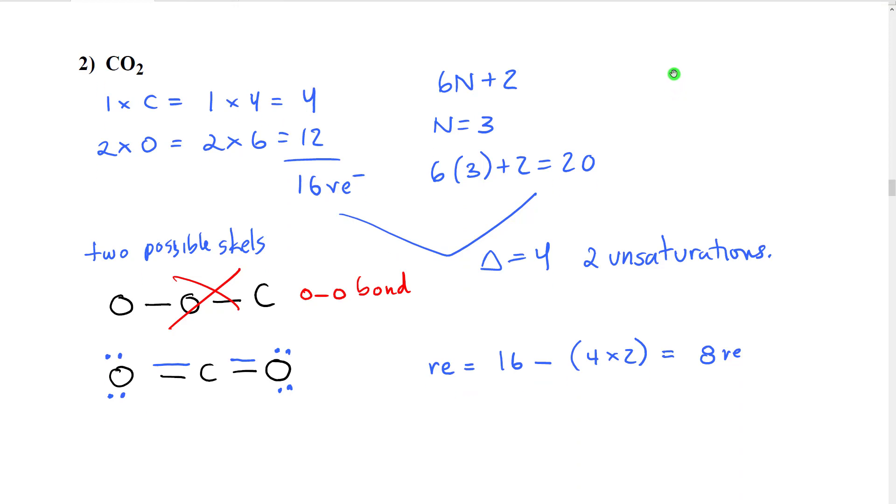The next Lewis structure I'm going to work is carbon dioxide, CO2. So first of all, let's count our valence electrons. So we have one carbon, which would give us one times four. We have two oxygens, which would give us two times six. So four plus 12, 16 valence electrons.